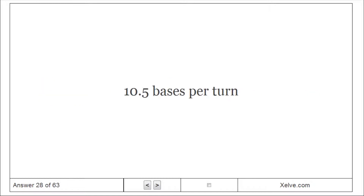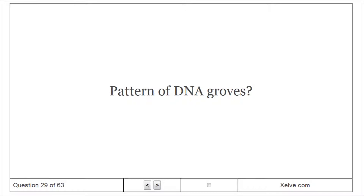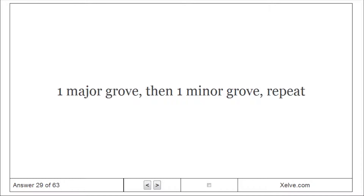How many bases per turn in the Watson-Crick model? 10.5 bases per turn. Pattern of DNA grooves: one major groove, then one minor groove, repeating.